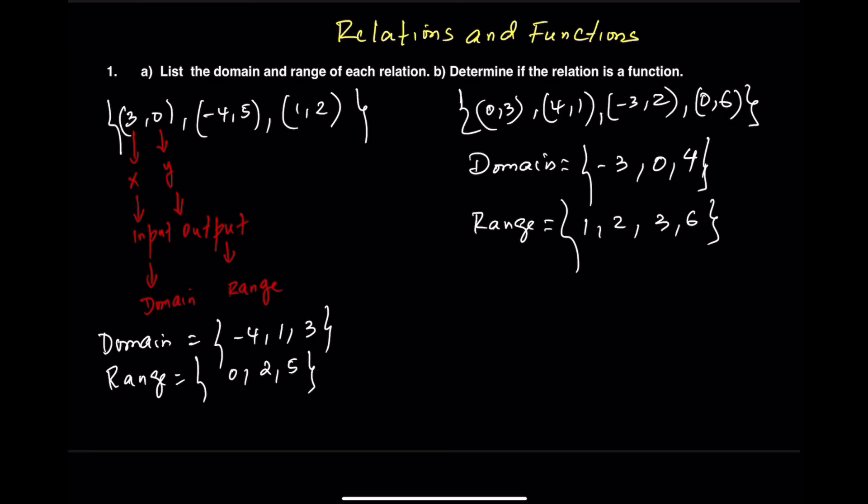Let's look at the first example. The ordered pairs are (3, 0), (negative 4, 5), and (1, 2). Each X value appears just once and connects to a single Y value. So this is a function.